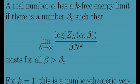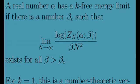We're now ready to give the classification scheme. A real number α will be said to have a k-free energy limit if there is some β_c such that the limit of the log of the partition function divided by β times n^k exists for all β greater than β_c. When k is 1, it's the 1-free energy limit, and that really is the analog of a physicist's free energy. This classification scheme would be worthless if no real number had such a k-free energy limit, or if all numbers did — it only makes sense if some numbers have different types of properties.